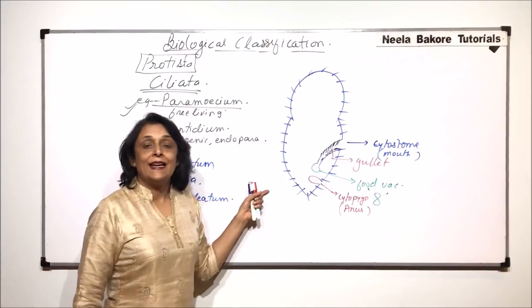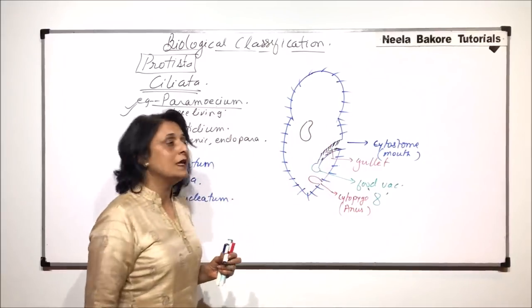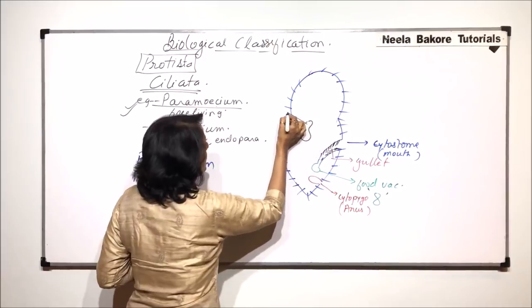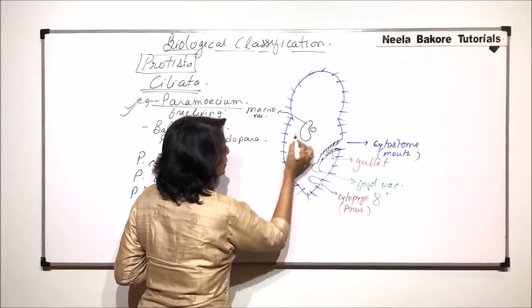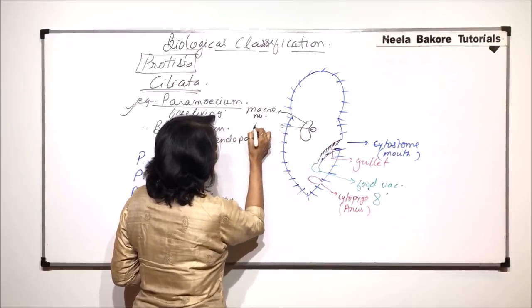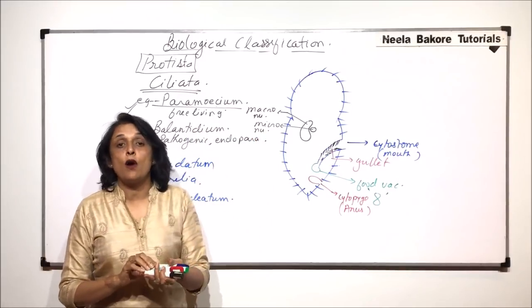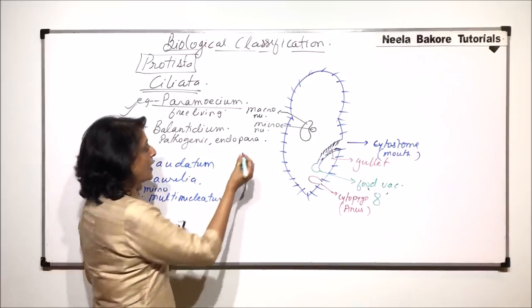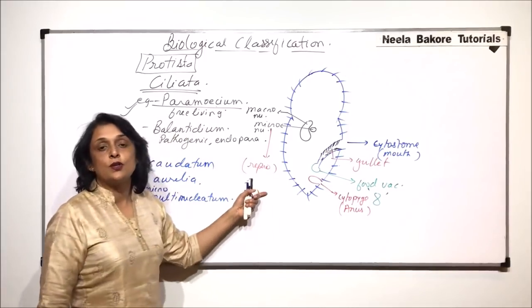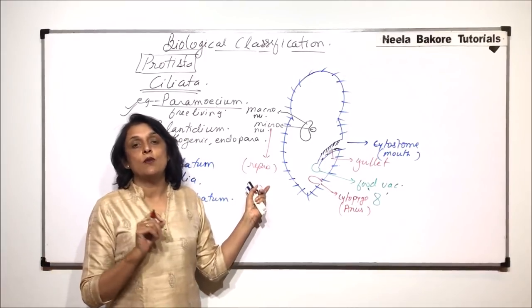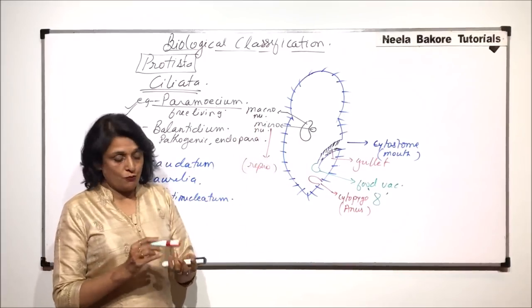As we said, there are two nuclei. One nucleus is a larger and kidney-shaped nucleus, this is called the macronucleus. And there is a small circular nucleus, which is called the micronucleus. Macronucleus is responsible for all the activities of the cell, whereas micronucleus is responsible only for reproduction. It is responsible for regulating only the reproductive processes, and all other activities are controlled by the macronucleus.